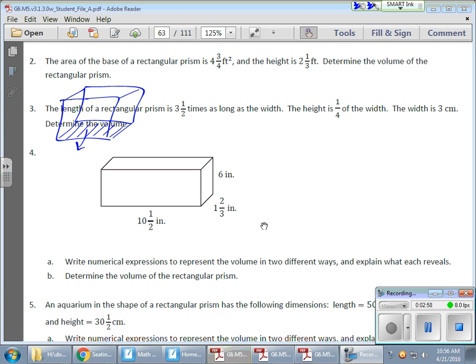is 4 and 3/4 feet squared. Now, this means that two values, my length and my width, were already multiplied together to give me that base. So volume equals length times width times height. These two were already taken care of. So those two combined already gave me my 4 and 3/4.